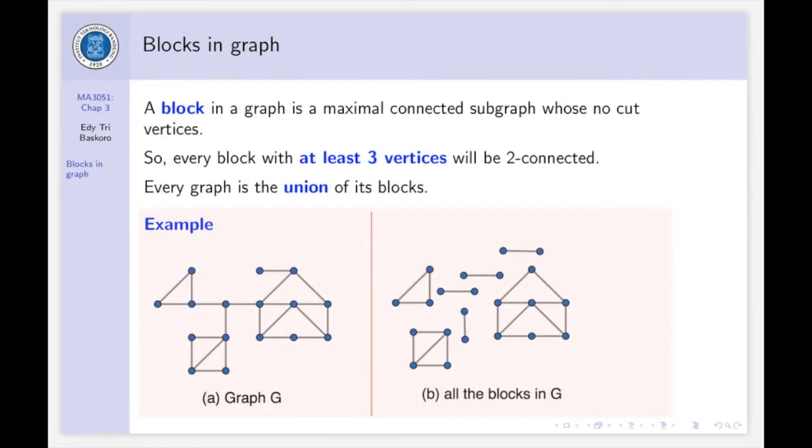For example, let's consider the left-side diagram. We have a graph G, and the blocks of the graph G shown in the right diagram. So this is the first block, and we have this is another block, and we have a block as a K2. We have four blocks, and then we have this is the biggest block in the graph G.